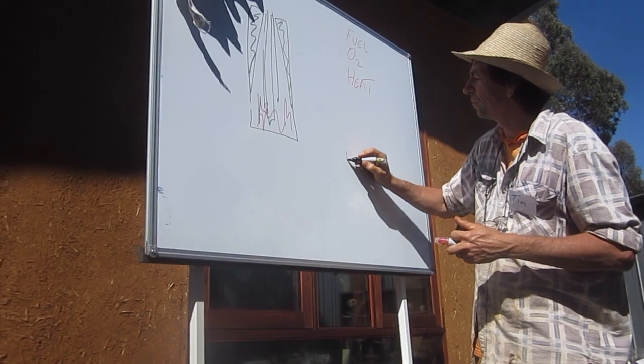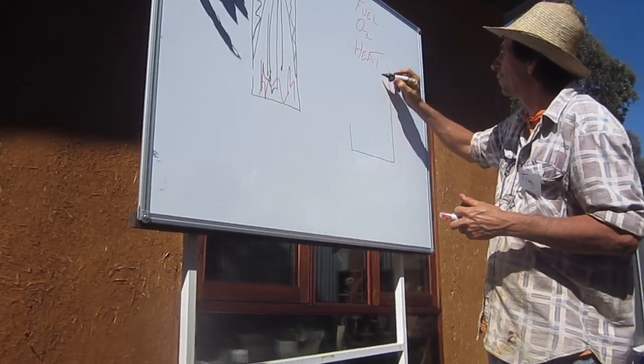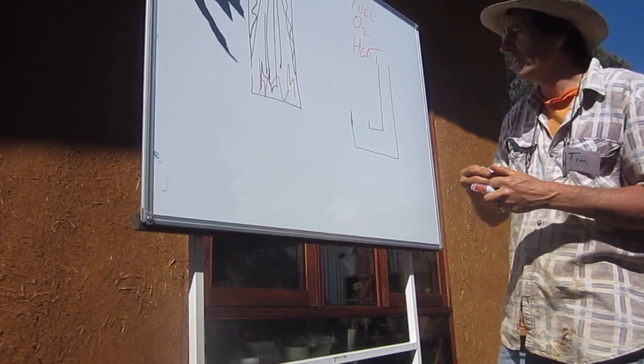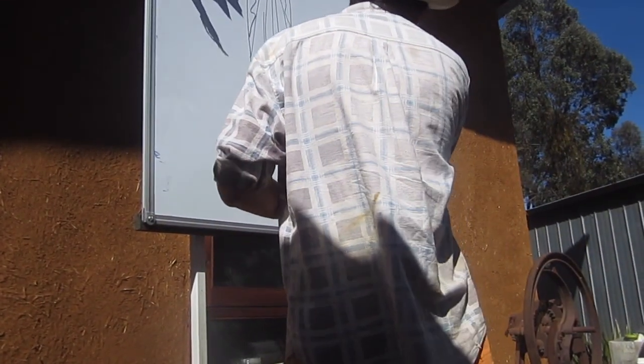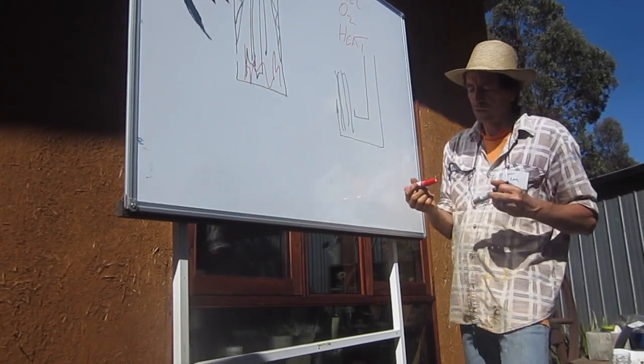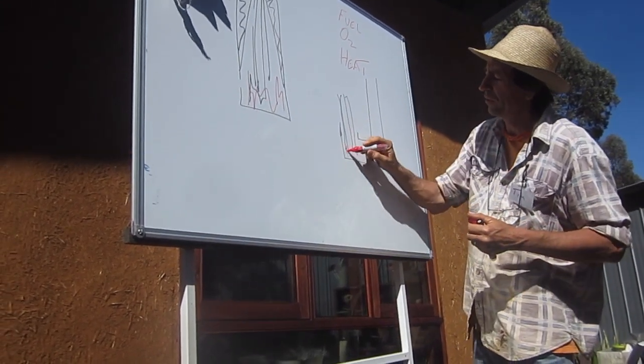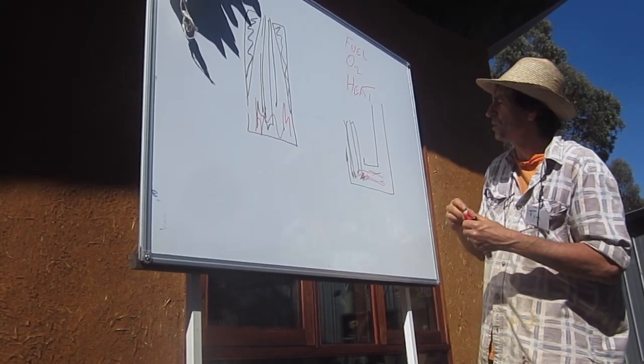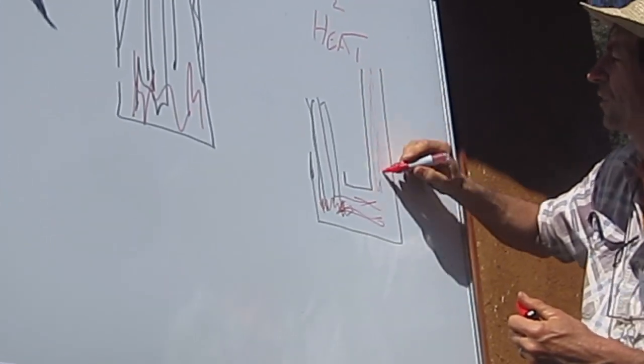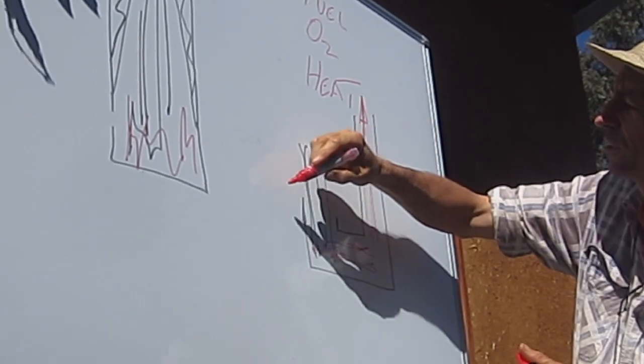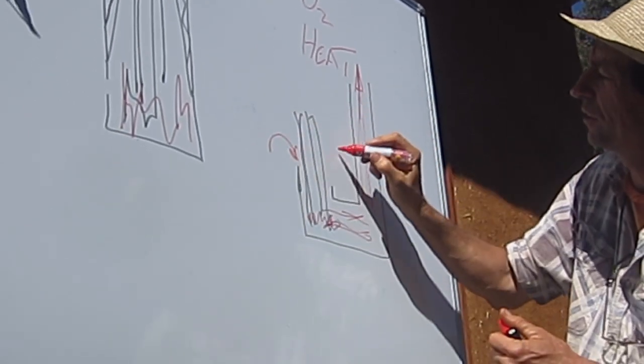Imagine this is our wood here. We light our fire here at the bottom, and because we're getting a draft effect on the chimney, we're getting a pulling effect. We're actually getting air drawn in around the sticks.